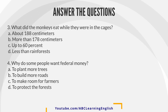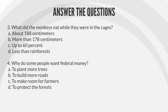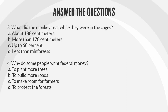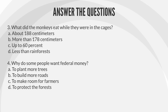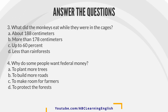Question 4. Why do some people want federal money? A. To plant more trees. B. To build more roads. C. To make room for farmers. D. To protect the forests.